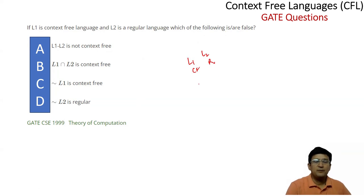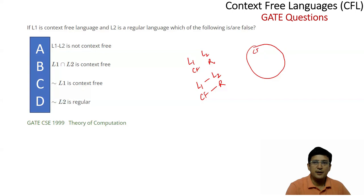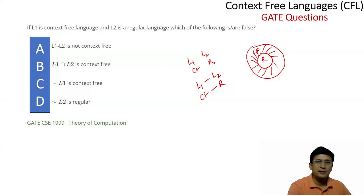The first statement says L1 minus L2. If we take the difference of the context-free language with the regular language, using a circle diagram, the difference (context-free minus regular) results in a context-free language. The statement claims L1 minus L2 is not context-free. Since we have to select the false statement, yes, this is the false statement.